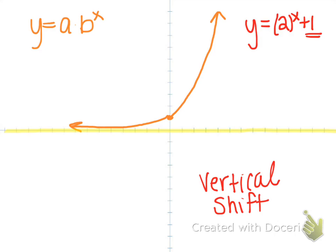Any shift that is over here and is not with the x, so it's not in the exponent, it's a big number outside, is going to be a vertical shift. So if it says plus 1, that means we're going up 1.